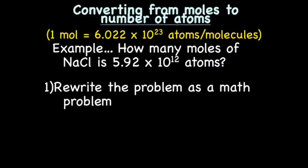All right, let's learn the steps for converting from moles to number of atoms. This is a very important part of the lecture. This is the how-to. The rest of it was background. So converting from moles to number of atoms. And I once again gave you the equality, which is 1 mole equals 6.022 times 10 to the 23rd atoms or molecules. So the example we'll be working with as we go through the steps is how many moles of NaCl is 5.92 times 10 to the 12th atoms. Now, we've got a little bit of a problem here. NaCl is not an atom. It's a molecule.